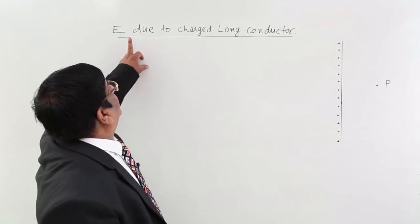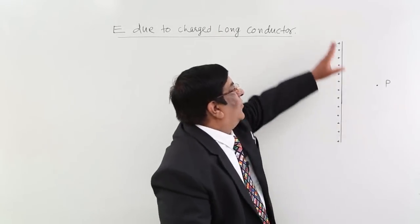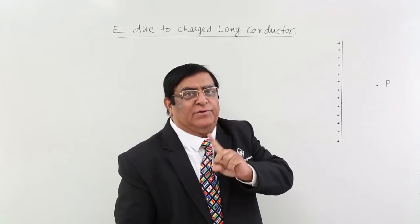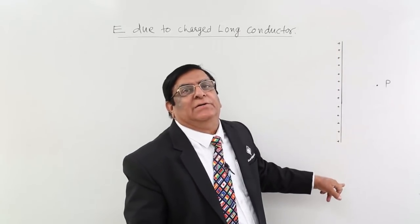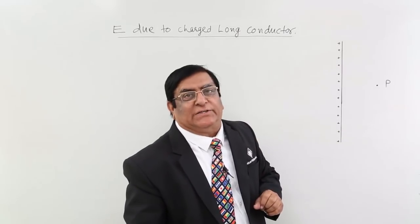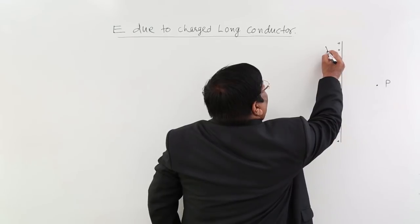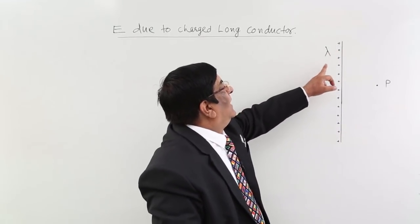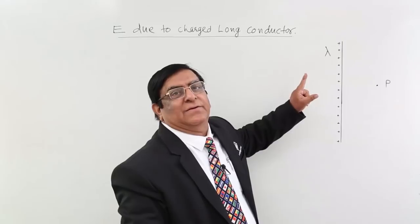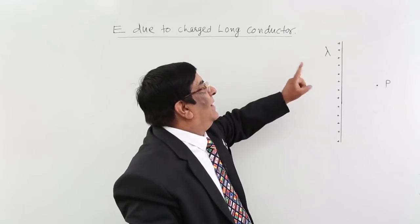Now we will calculate electric field intensity due to a charged long conductor. This conductor is very long — let us say infinitely long on both sides. Whenever we have a charge distribution along a length, we do not use the term total charge; we use charge per unit length. The fixed symbol for that is lambda — lambda coulombs per meter — which is the linear charge density.